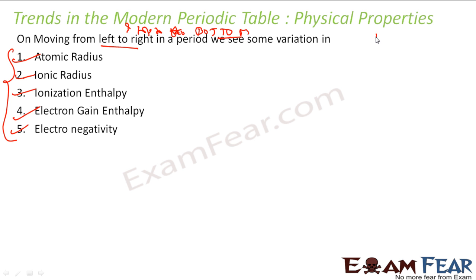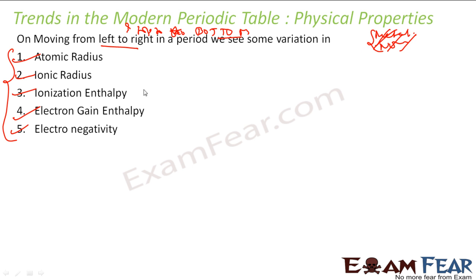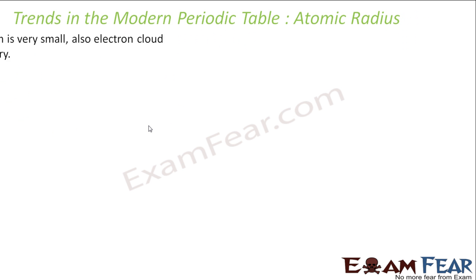There are other trends also, for example metallic character and non-metallic character, but those things we have already learned in class 10, so we won't be doing that. The main five properties we should be understanding the trends for are atomic radius, ionic radius, ionization enthalpy, electron gain enthalpy, and electronegativity.